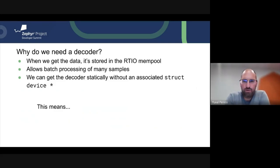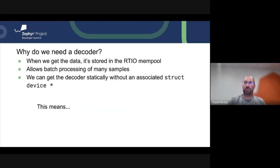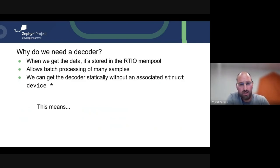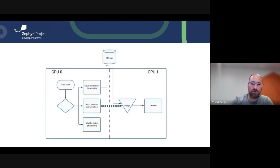Why do we even need the decoder? When you get the data it's stored in the RTIO mempool in a raw byte format — whatever the sensor provided. This allows batch processing of all samples on our own terms, effectively in a delayed thread, or even user-triggered. It also means we can get the decoder statically, since it has no state — it's associated with the compatible string and not the actual device instance.